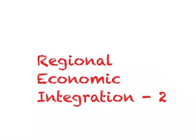In the previous lecture, I defined what regional economic integration is, and we also looked at the different degrees of economic integration, starting from preferential trade arrangements. Countries can move to free trade area, then to customs union, then to common market, and then to economic union. Now let us look at the benefits and costs involved with a country signing a free trade agreement with its neighbors.